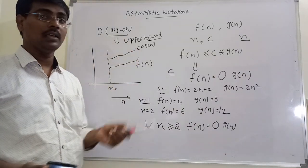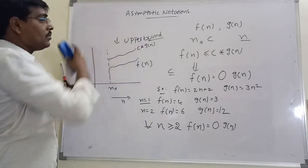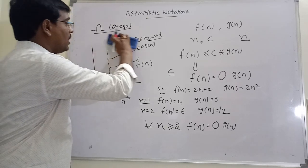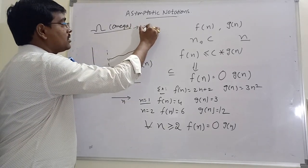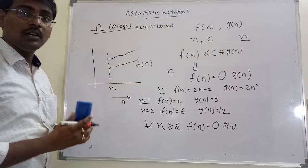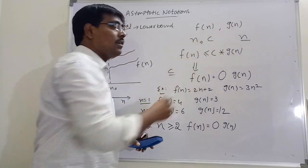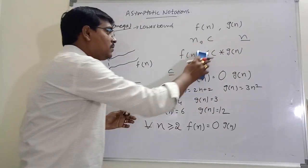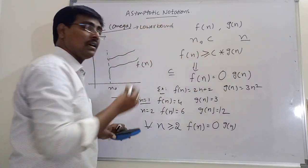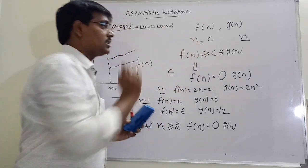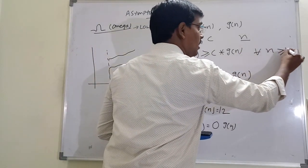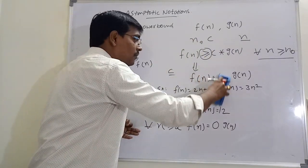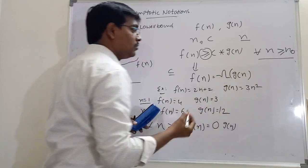Next is lower bound, that is Omega notation. Omega notation specifies the lower bound of the algorithm. Similar to upper bound, consider two functions f(n) and g(n), and two integers n0 and c, where c is a constant. The condition is f(n) greater than or equal to c into g(n), for some constant c and for all n greater than or equal to n0. Then f(n) is represented as Omega of g(n).